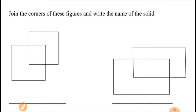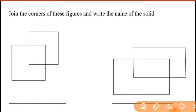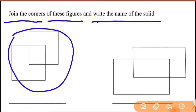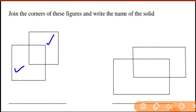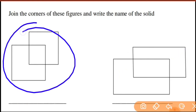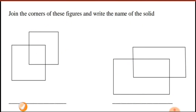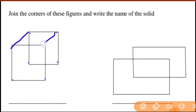Next activity: join the corners of these figures and write the name of the solid. You can see two squares — one square and a second square. These are 2D shapes with only length and breadth. You have to join the corners — corner one, two, three, and four of each square.